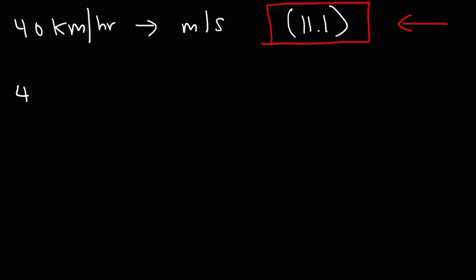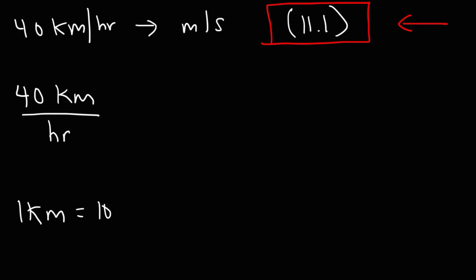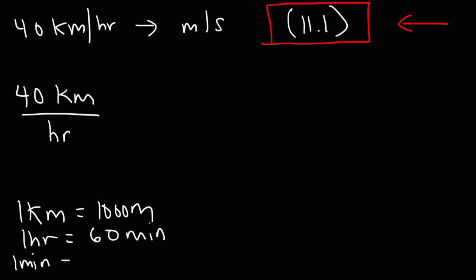Start with what you're given — 40 kilometers — and put the unit hours on the bottom. Now you need to know the conversion factors. One kilometer is equal to 1,000 meters. One hour is equal to 60 minutes, and one minute is equal to 60 seconds. The first thing we want to do is convert kilometers to meters.